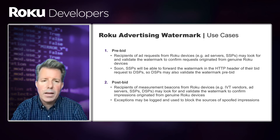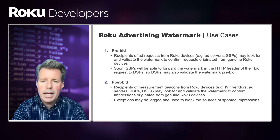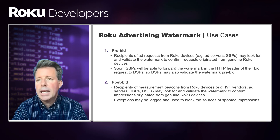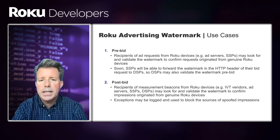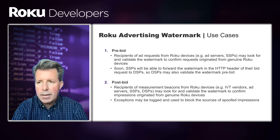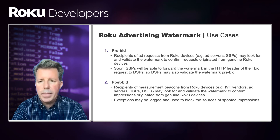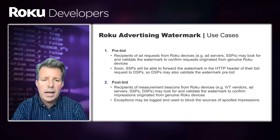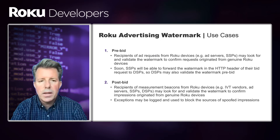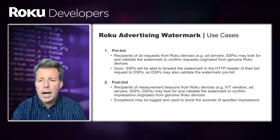The post-bid scenario involves recipients of measurement beacons from Roku devices. This can really be any kind of ad tech entity — IVT vendors, ad servers, SSPs, DSPs — anyone that has an ad measurement beacon. They can look for and validate the watermark on their beacons to confirm that impressions originated from genuine Roku devices. In the post-bid scenario, exceptions should be logged and used to block the sources of spoofed impressions on a go-forward basis.